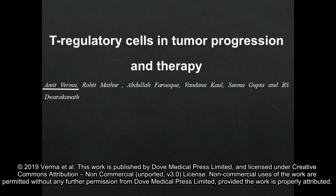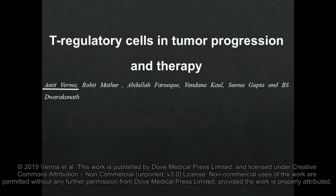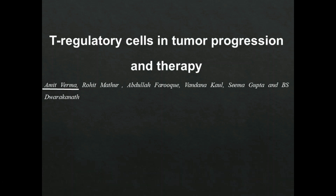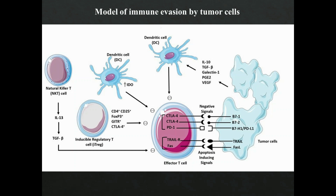As we know, cancer arises due to deregulation in the growth of functionally matured somatic cells, and immune evasion is one of the key events for the successful establishment of tumors. Cancer cells modulate several immune pathways and networks that lead to secretion of immunosuppressive cytokines like IL-10 and TGF-beta.